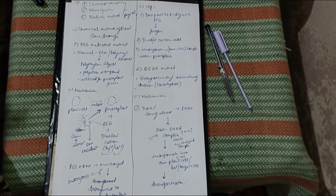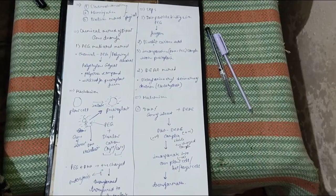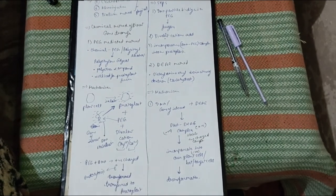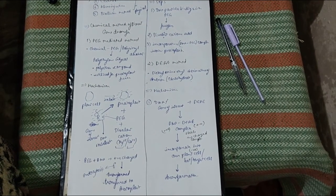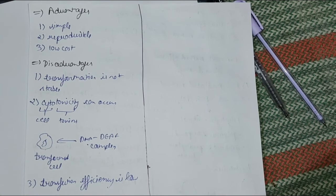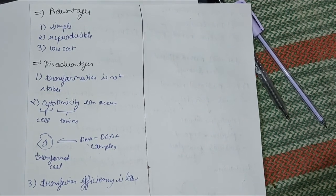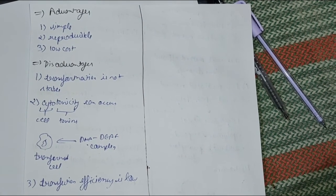So these were the two main important chemical methods through which we can perform transformation inside a plant cell. Along with this, I have explained the advantages and disadvantages of the DEAE method.